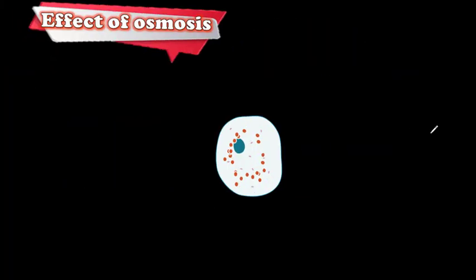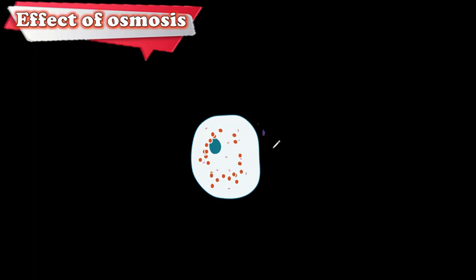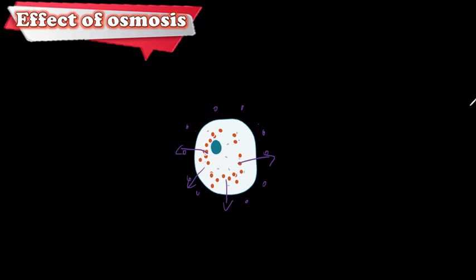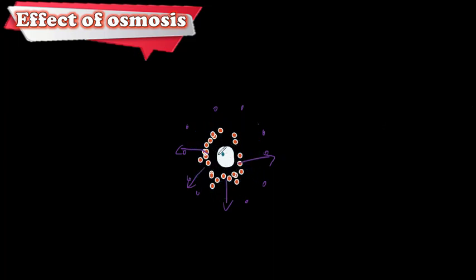The cell will swell up and become bigger because water enters the inside. Now in another scenario, if you have a high concentration of water inside the cell and a low concentration of water outside — maybe there's a concentrated solution outside which doesn't have much water — the water from inside the cell will diffuse out.